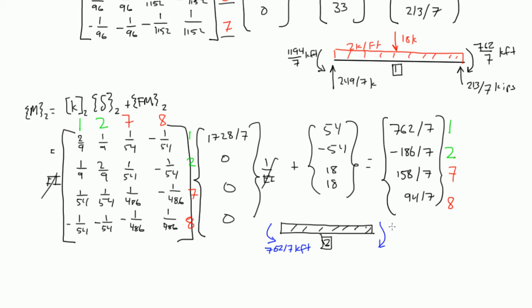And that means it was going clockwise, 186 over 7. And then you have these two shears, 7 and 8, because 7 and 8 are the vertical degrees of freedom. You had 158 over 7 and 94 over 7 kips.